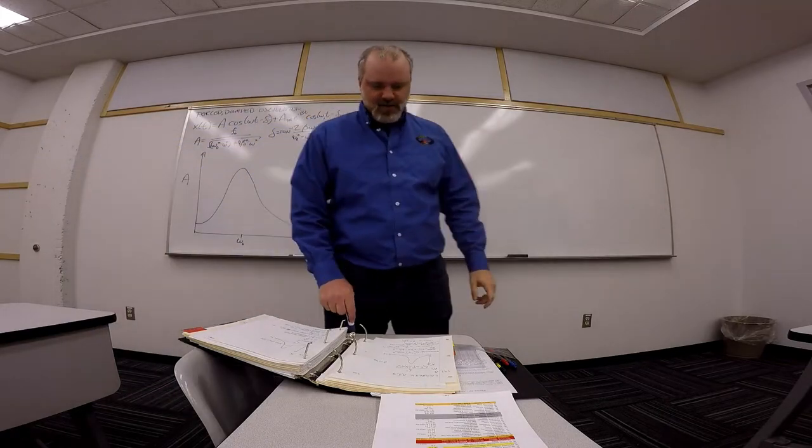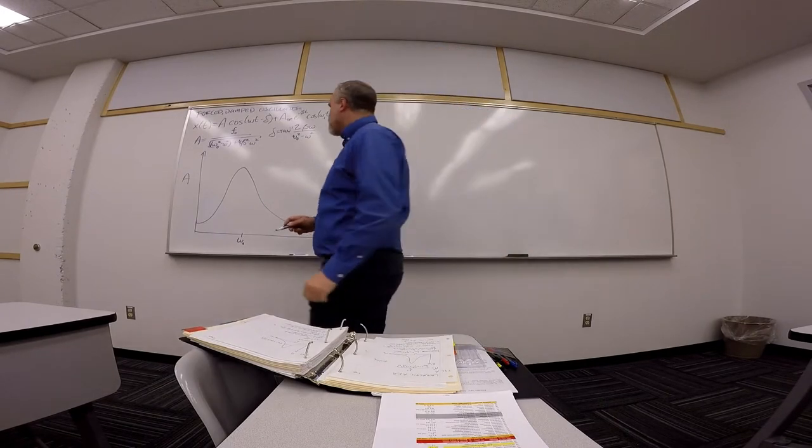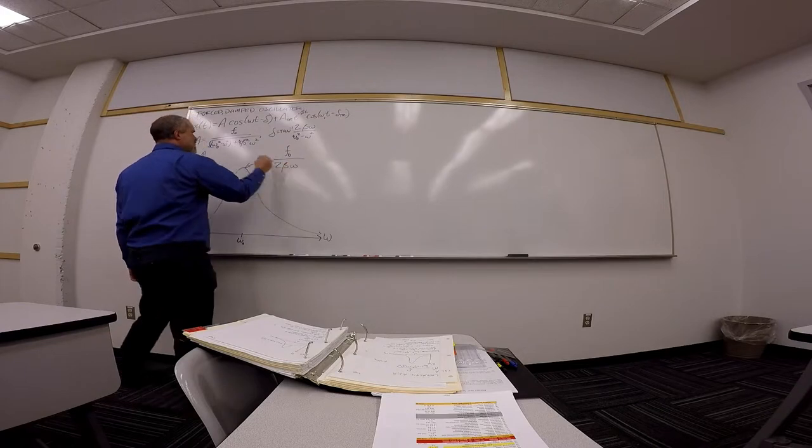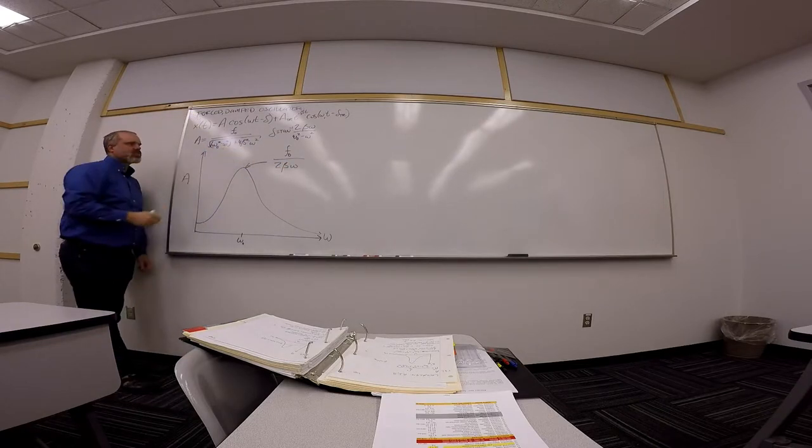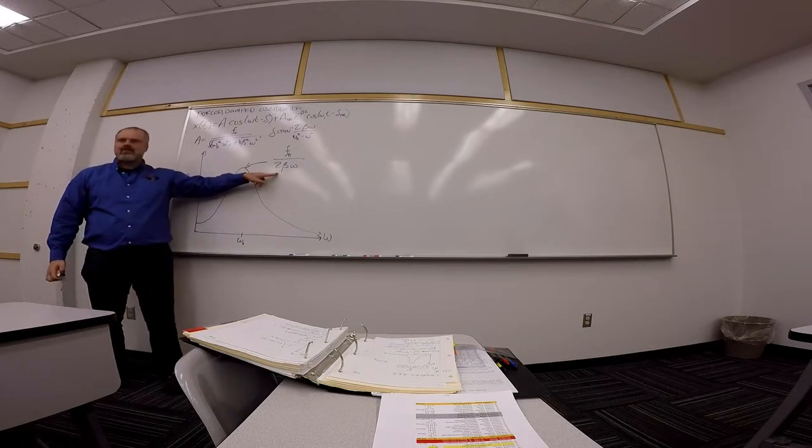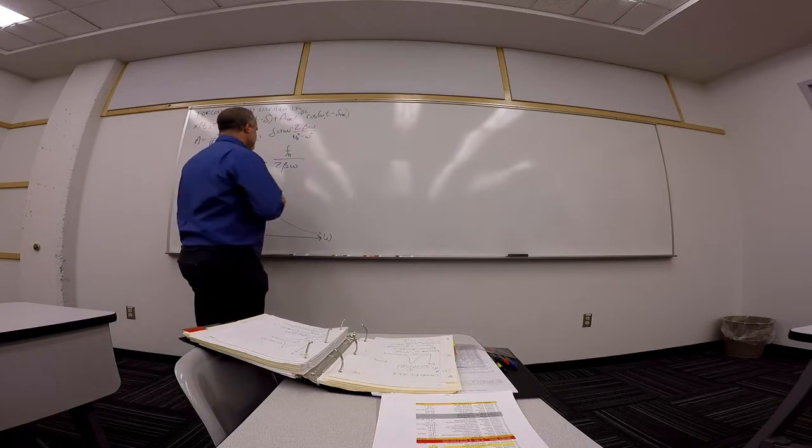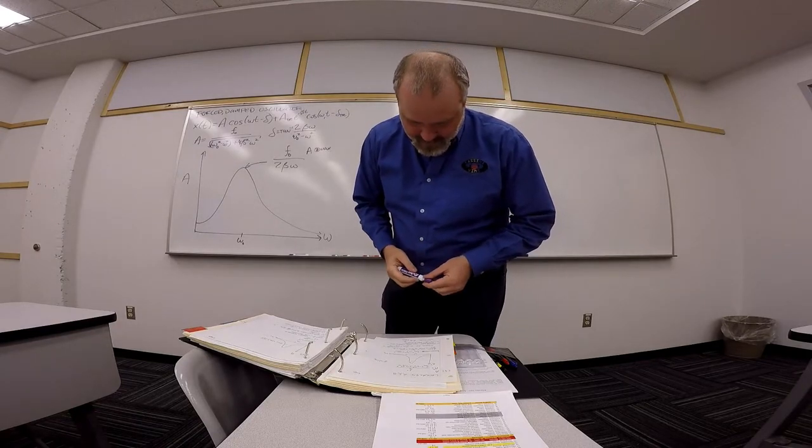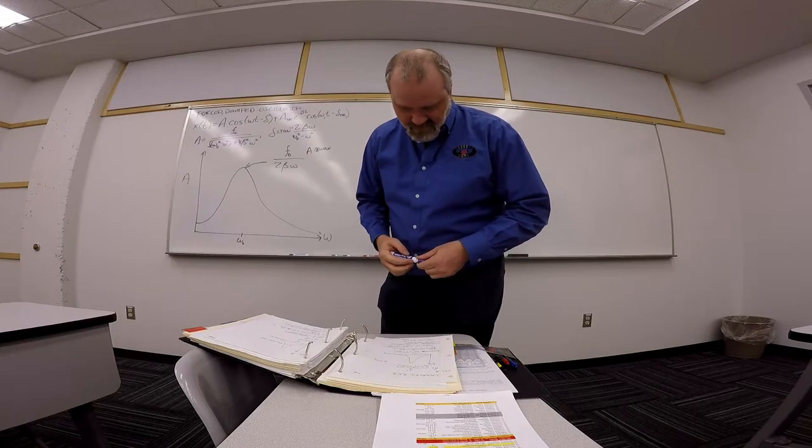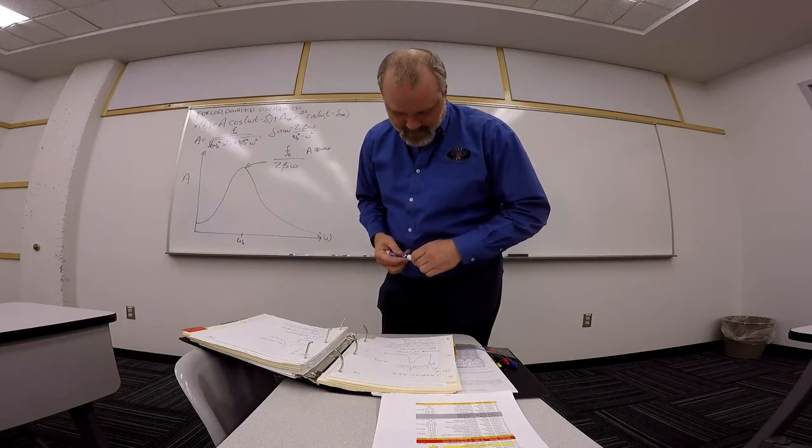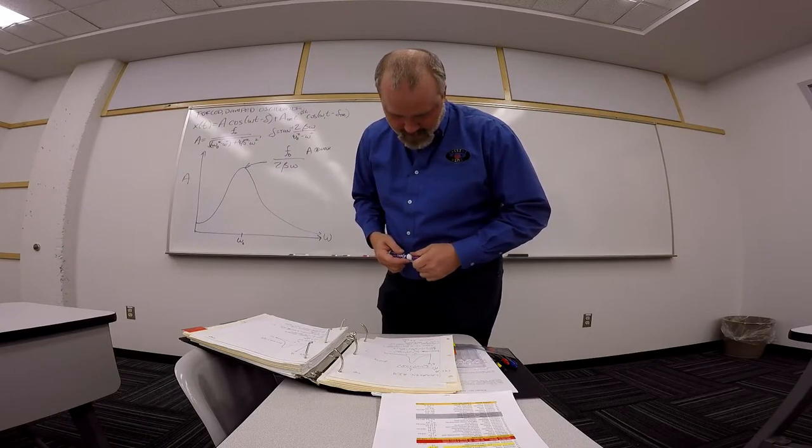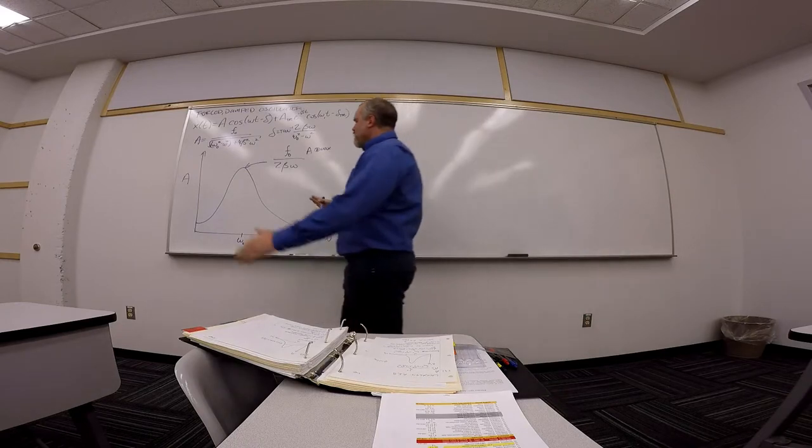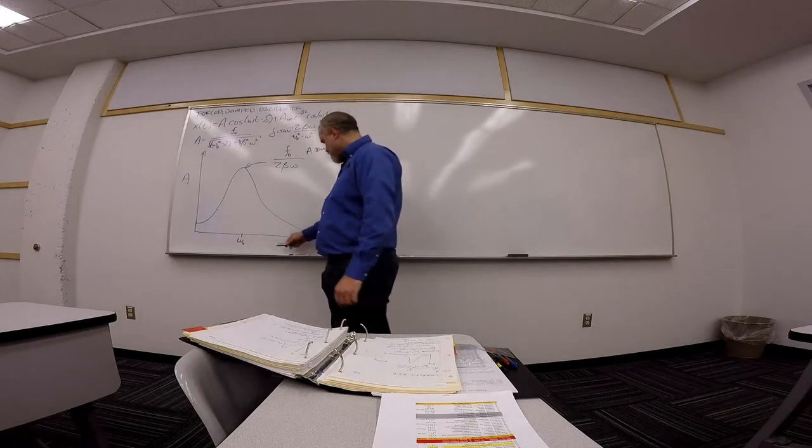We're not quite even done talking about the amplitudes though. If this maximum comes out at F naught over 2 beta omega, so when this term is zero, you're just taking the square root of 4 beta squared omega squared. And the maximum comes out here. What corresponds to the width of this peak is the next thing we're going to talk about. So it's a different color. The width here.